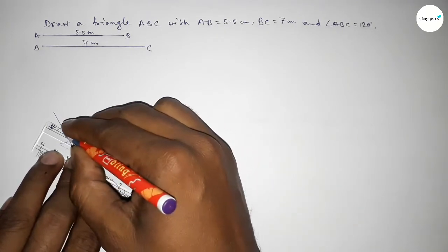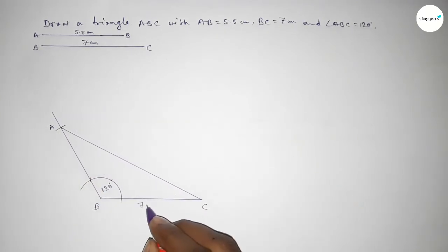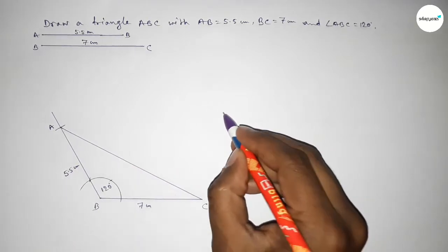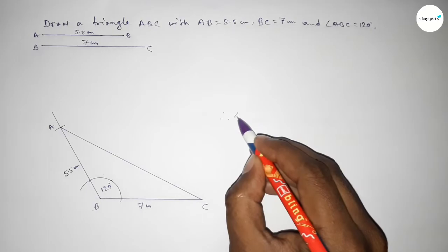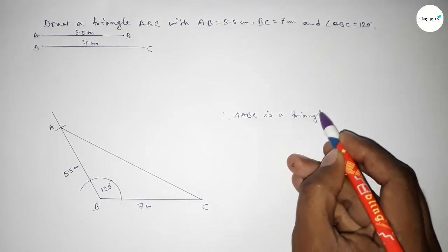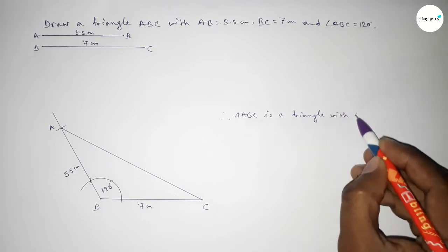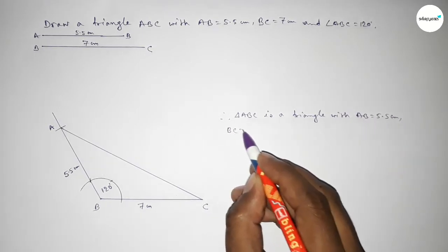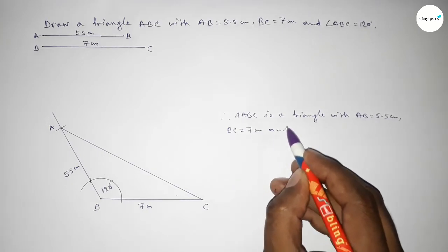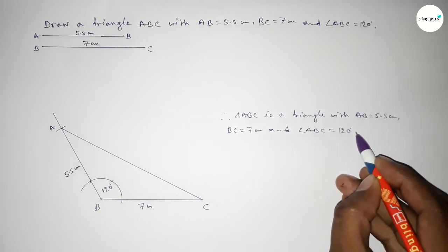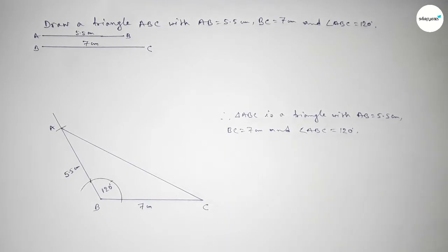Now joining A and C to complete triangle ABC. This side is 7 centimeter and this side is 5.5 centimeter. Therefore triangle ABC has AB equal to 5.5 centimeter, BC equal to 7 centimeter, and angle ABC equal to 120 degrees. That's all — thanks for watching. If this video is helpful to you, please share it with your friends.